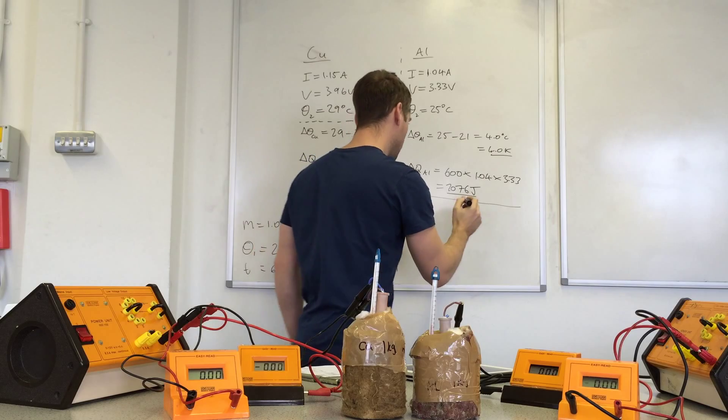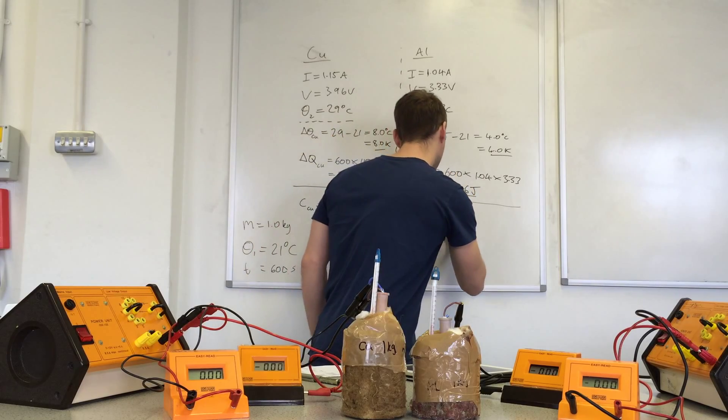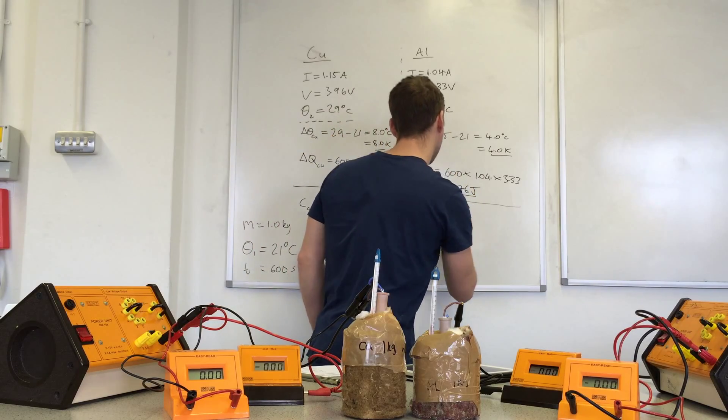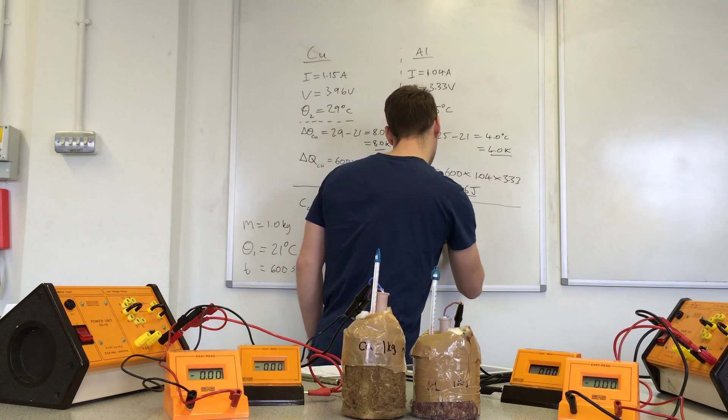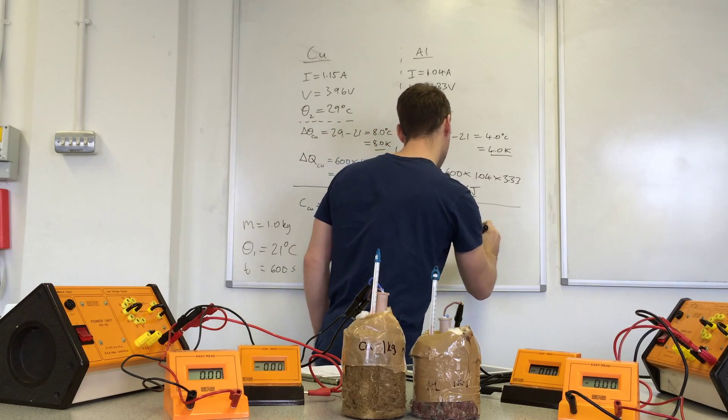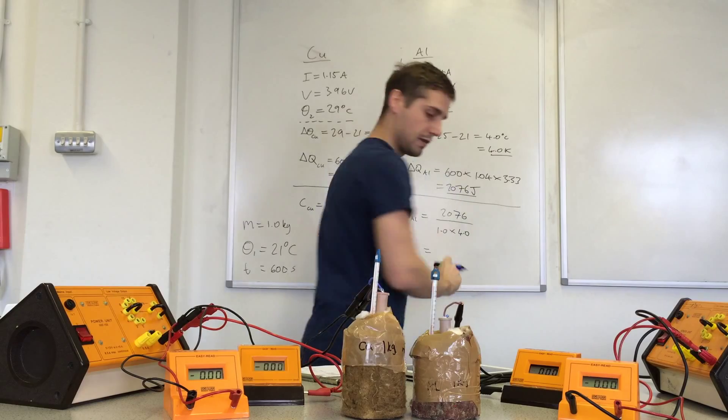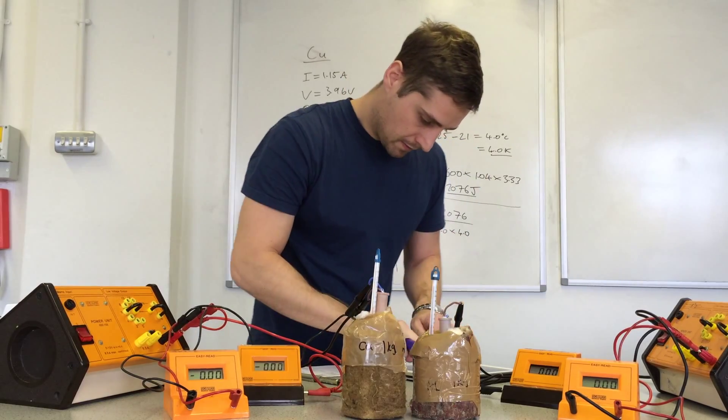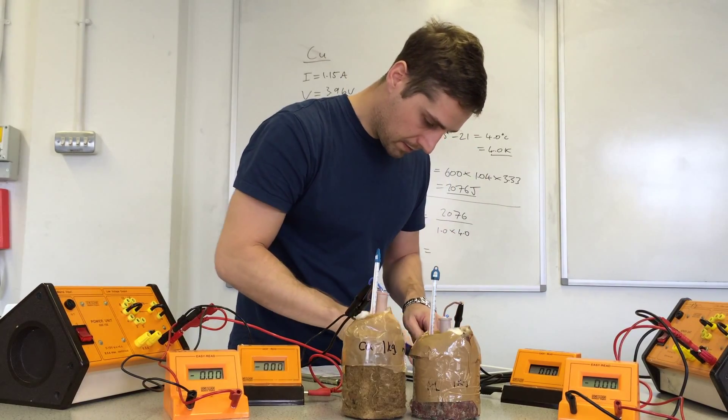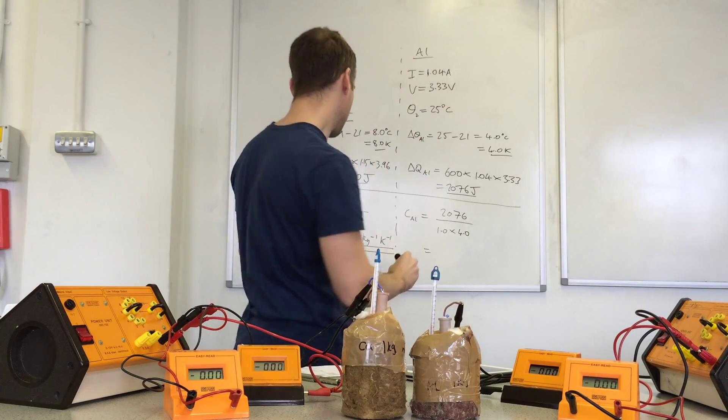For the aluminum it's 2076 divided by 1 times 4, which gives us 590 joules per kilogram Kelvin.